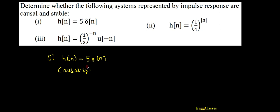For any system to be causal, the condition is its impulse response, H of n, must be 0 for n less than 0. So this is the condition for any system to be causal.